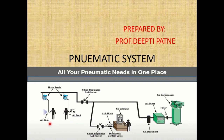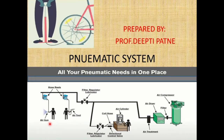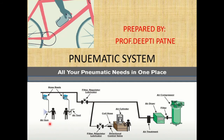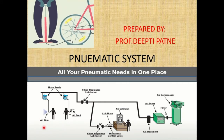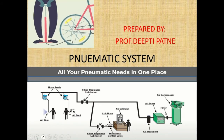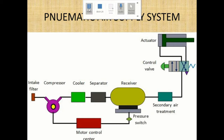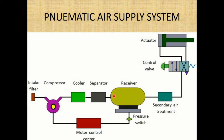For pneumatic system applications, a basic example we all used in childhood is an air pump for cycling. There is also an air gun used for cleaning cars, and various other pneumatic components. Now we will see step by step the block diagram of the pneumatic control system. The pneumatic air supply system involves an inlet filter, compressor, cooler, separator, receiver, pressure switch, and motor control system — all called the primary air treatment system.